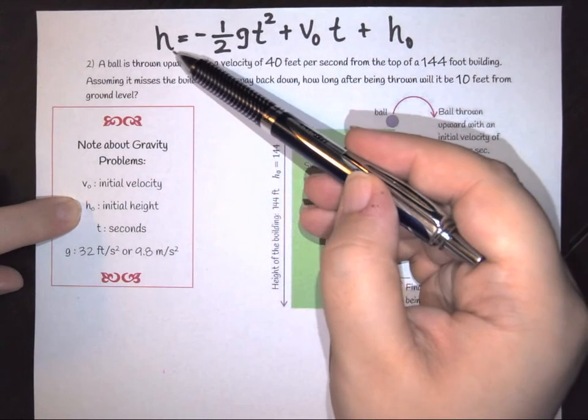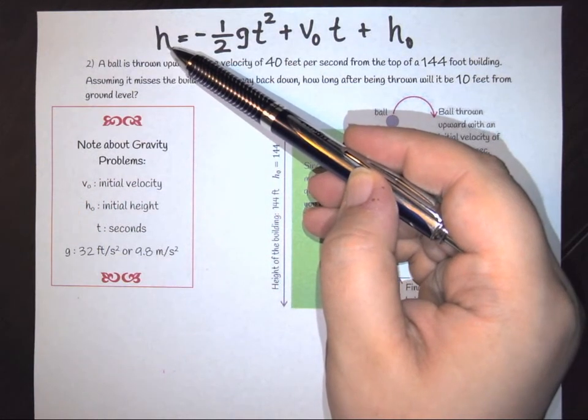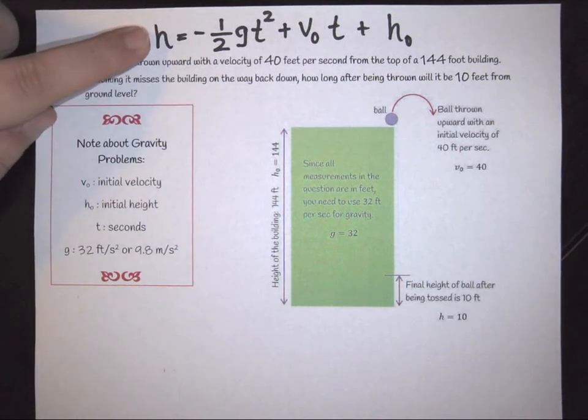That means this H on this other side here would be like, say, your final height. Okay? Now, in some problems, you're going to be given your final height as being an actual distance. And in some problems, you're going to be told that final height is ground level. If you are told your height is at ground level, then you would be talking about zero. If you are given a height above ground level, well, then you would be inputting that number here.